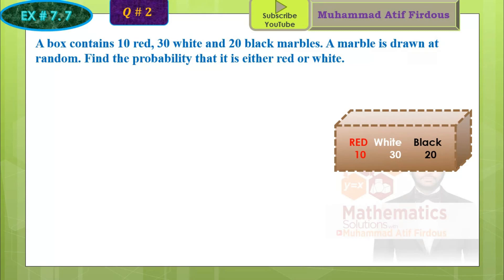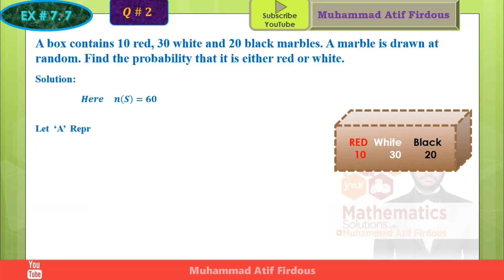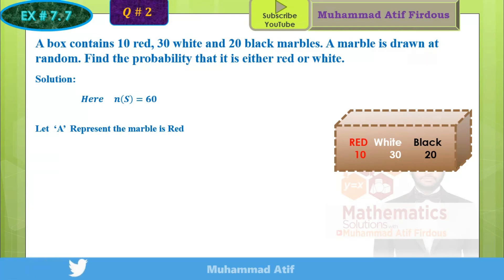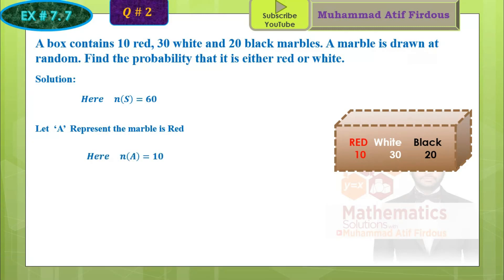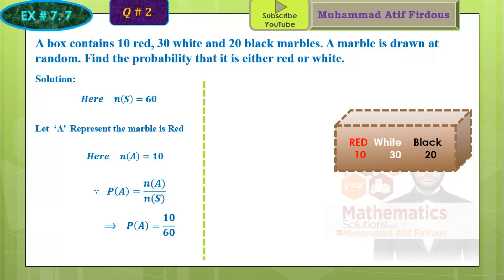First, total number of marbles: 10 plus 30 plus 20 equals 60. So N of S, the total number of marbles, is 60. Now there are two things to find — red and white. Let A represent the red marble. The number of red marbles is 10, so N of A equals 10. The probability of A equals required over total, which is 10 over 60. This is the probability of the red marble.